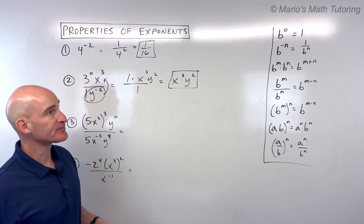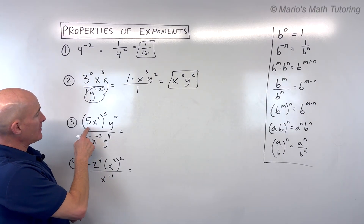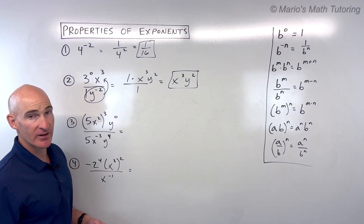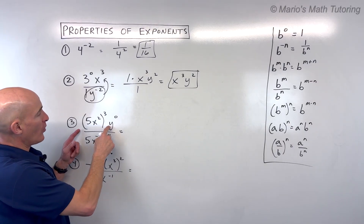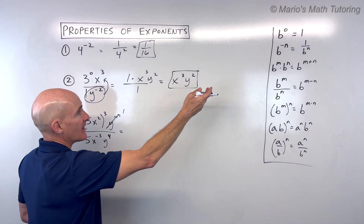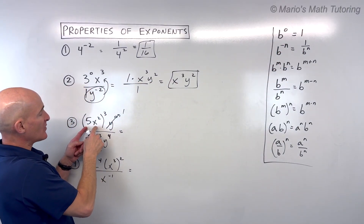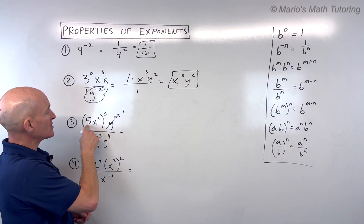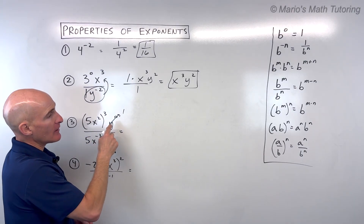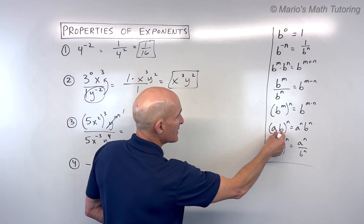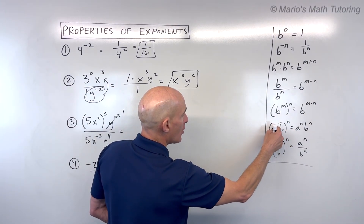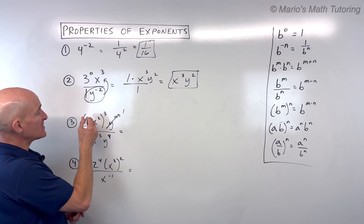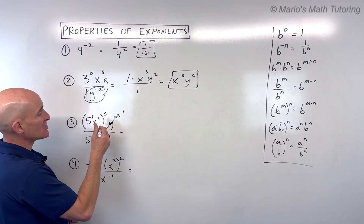For number 3, we've got the quantity 5x squared to the 3rd power times y to the 0, all divided by 5x to the negative 3 times y to the 4th. Right away, y to the 0 equals 1. We have a monomial — a product to a power. When you have a product raised to a power, you apply that power to all quantities inside the parentheses. Power to power, you multiply the exponents. If you don't see an exponent, it's understood to be 1. So this gives us 5 cubed, and 2 times 3 is 6, so x to the 6th.